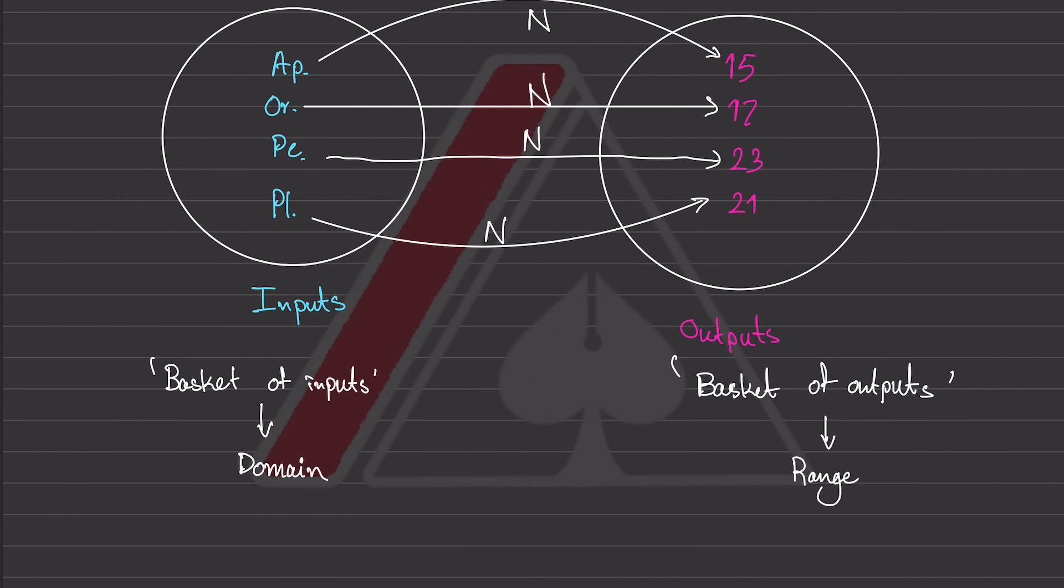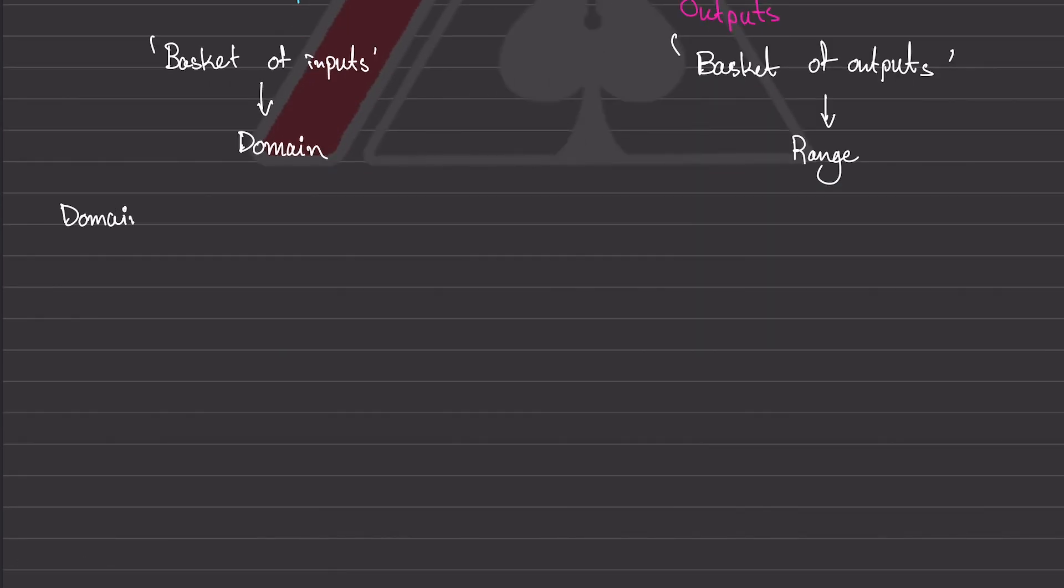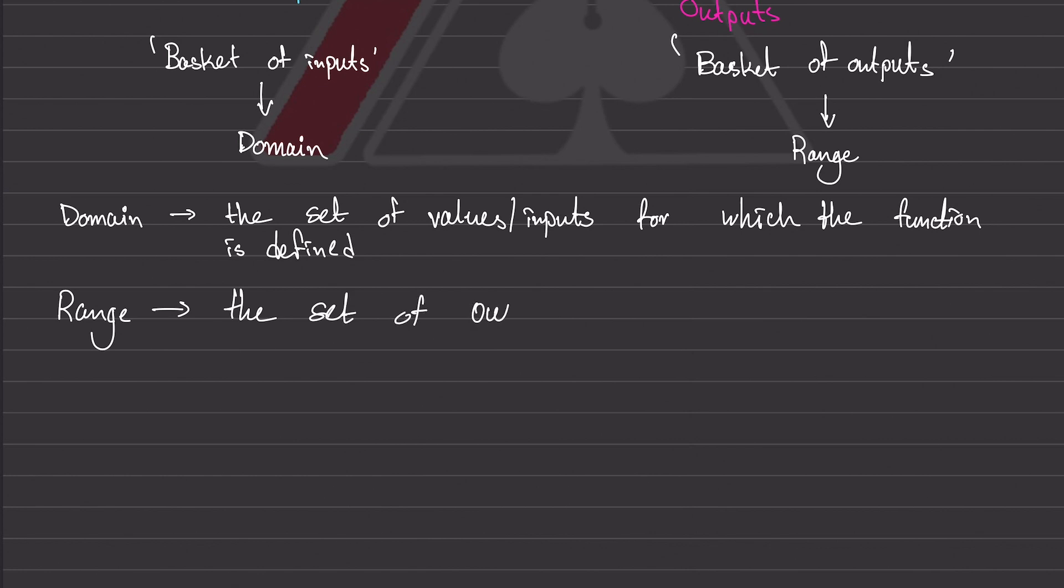So if you were to formally define them, your domain is the set of values or inputs for which the function is defined. In other words, if you were to pick something, a value or an input that was outside the domain, the function would be like, wait, this doesn't make sense. What is this input that you're giving me? And so it would spit out an output of say blank or question marks. And at the same time, we have the range, the set of outputs that the function can generate.